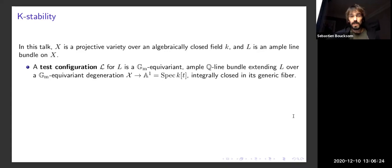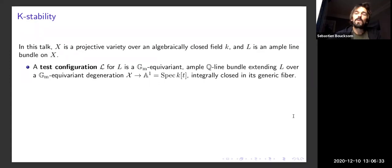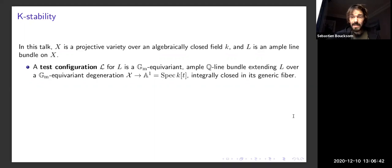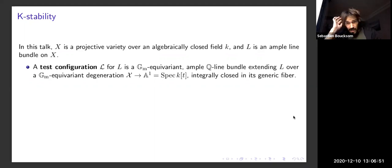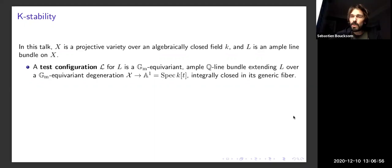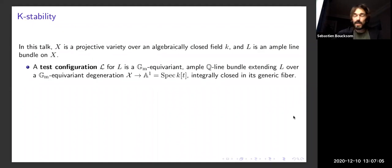A test configuration script L for the given line bundle is a shorthand for a degeneration script X of X — a Gm-equivariant degeneration over A1 — plus a Q-line bundle script L which I assume to be ample over script X, extending the given polarization over the fiber over one. I also always assume that my test configuration is integrally closed in its generic fiber, which means exactly normal when X is normal.